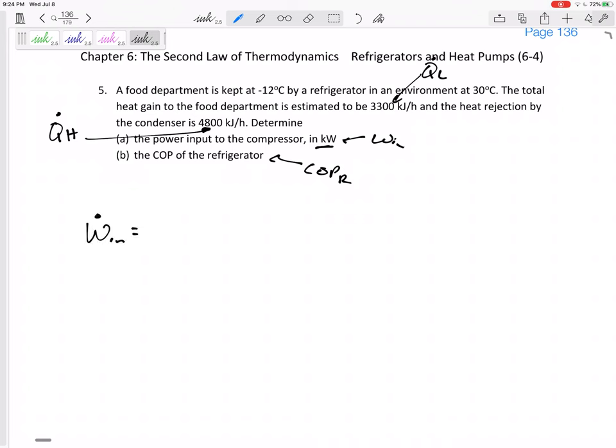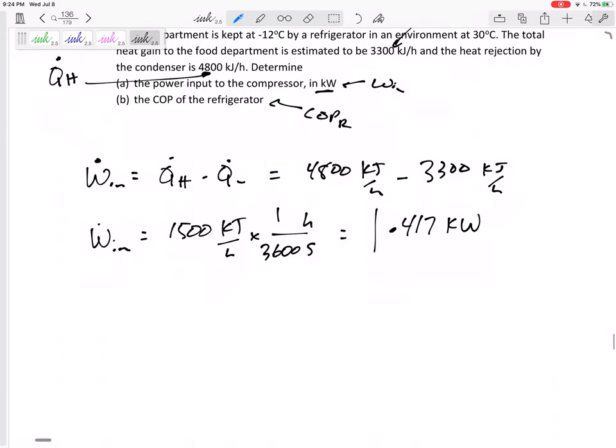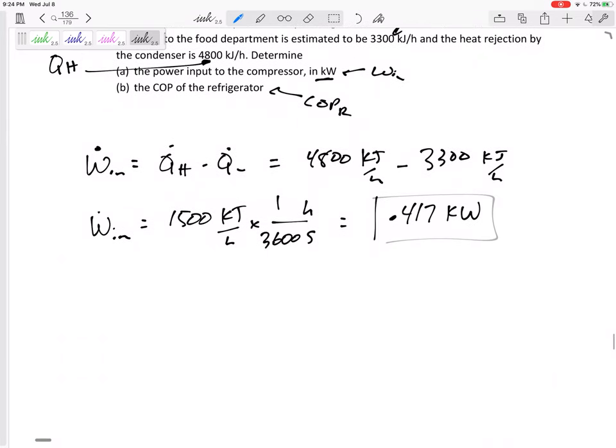So let's determine the W_in in kilowatts and the coefficient of performance of the refrigerator. So the W_in is Q_H minus Q_L. So 4,800 kilojoules per hour minus 3,300 kilojoules per hour. I'll go ahead and say I get 1500, but that's not kilowatts. That's kilojoules per hour. I need to change hours to seconds divided by 3,600. So 0.417 kilowatts is the work in, the power input in.